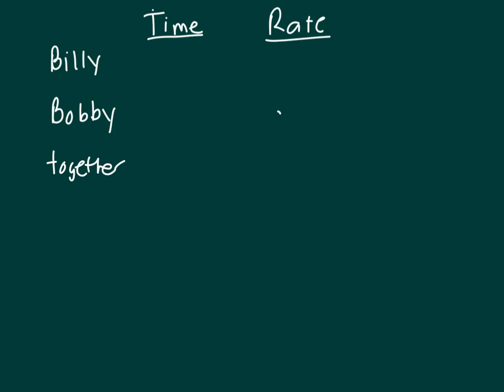Twin brothers Billy and Bobby mow their grandparents' lawn together in 92 minutes, so together it's 92 minutes.